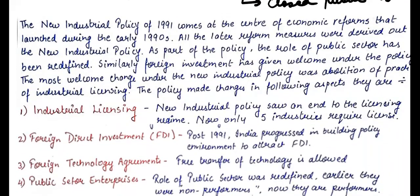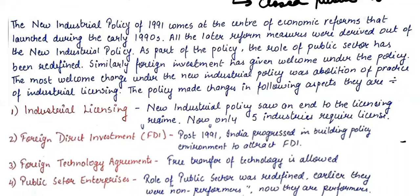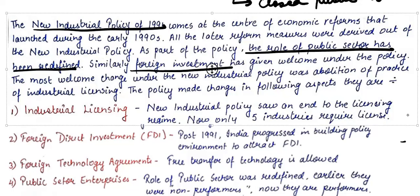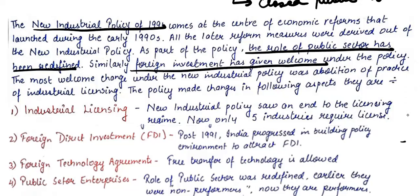The New Industrial Policy was launched in 1991, and the reforms it brought were mainly LPG — Liberalization, Globalization, and Privatization. As part of the policy, the role of the public sector was redefined — it was no longer solely responsible, and the private sector was brought into many fields like the telephone and communication sector. Foreign investment was also welcomed under this policy.